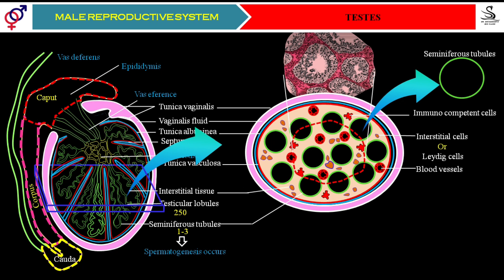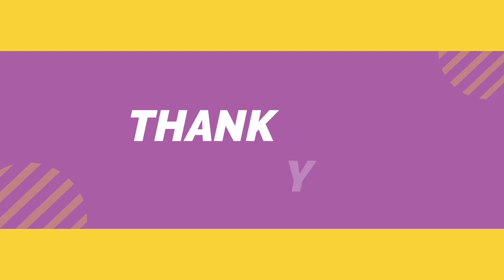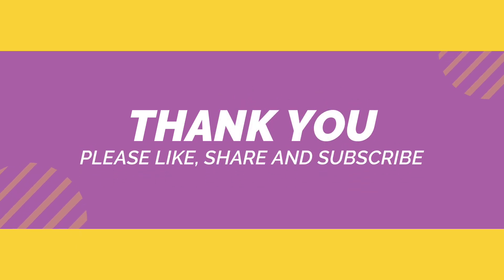Leydig cells are responsible for the secretion of testosterone. Testosterone plays a very important role in the body — it is the one which helps boys become men, making them fertile human beings. Before the secretion of testosterone, spermatogenesis is not occurring and they are not fertile. Testosterone is what initiates those changes. We will understand all of this in the next videos. Thank you for patiently listening, making notes, and sketching diagrams — that will help you understand the male reproductive system. Please subscribe to the channel for notifications.